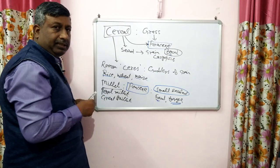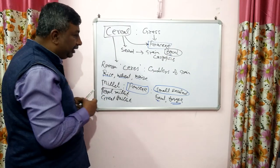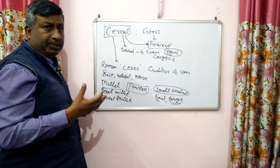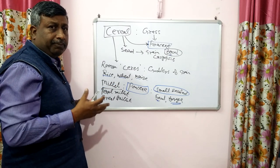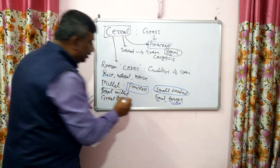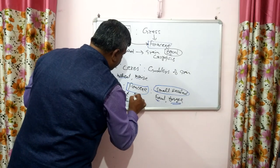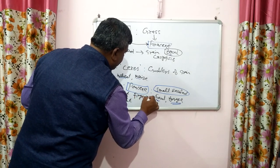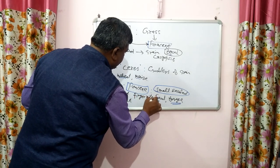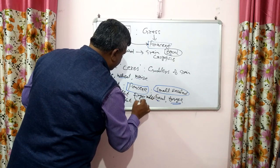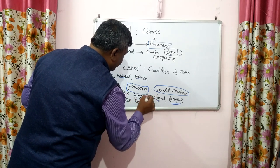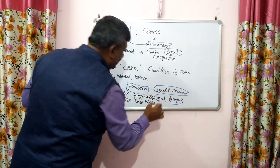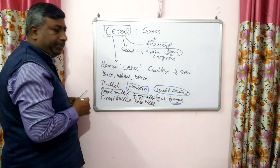So sorghum is known as great millet. Other examples include finger millet, proso millet, kodo millet, and foxtail millet — there are different types of millets.